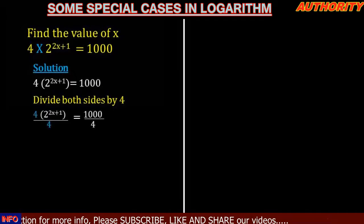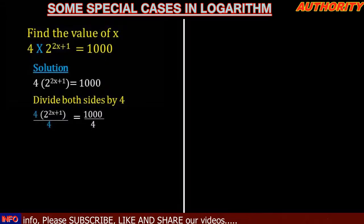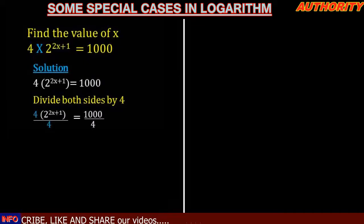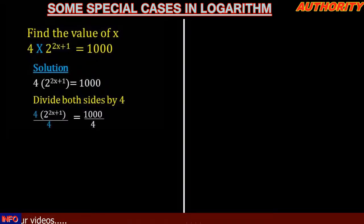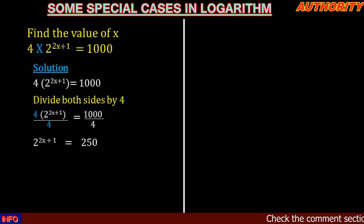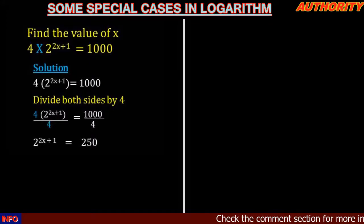From here, let's divide both sides by 4. That means we're going to have 2 raised to the power 2x plus 1 equal to 1000 divided by 4, which gives us 250.